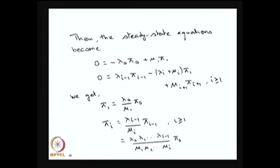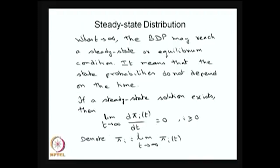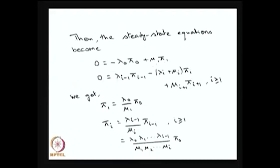Since, as t tends to infinity, the derivative of P(i,j)(t) equals 0, all the left-hand sides in the forward Kolmogorov equation become 0. On the right-hand side, as t tends to infinity, pi_i(t) becomes pi_0 and pi_1. So the equations for the unconditional probabilities pi_i are written in the same form, yielding minus lambda_0 times pi_0 plus mu_1 times pi_1 for the first equation. All other equations have three terms; this is a homogeneous system requiring one normalizing condition.